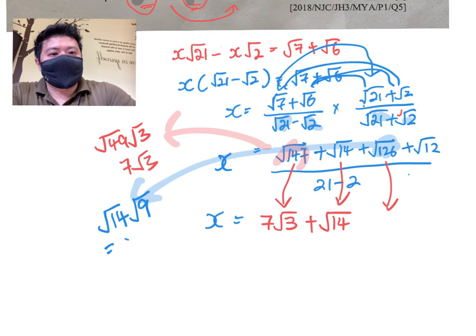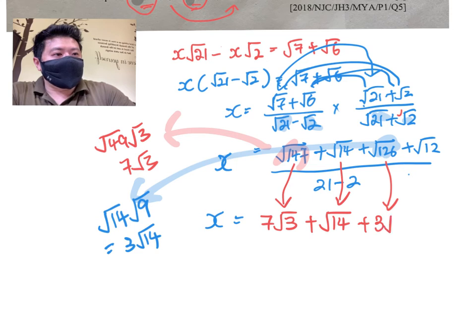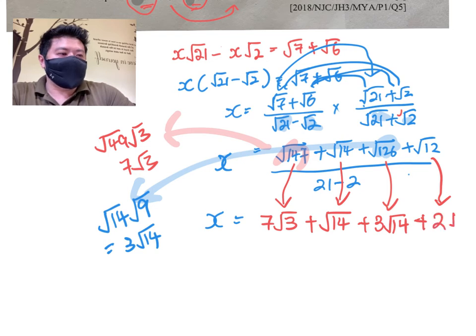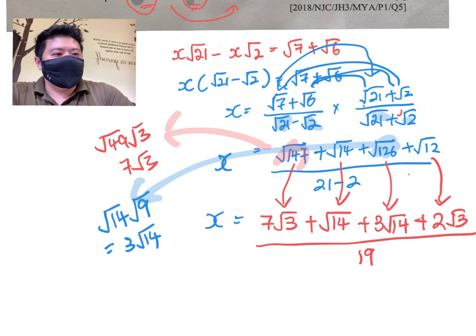Okay, which is the same as 3√14. So this itself is 3√14. And √12, I mean it's quite familiar, can be written as 2√3. If you do not know this, please go and figure it out—I'm not going to teach you in this video.